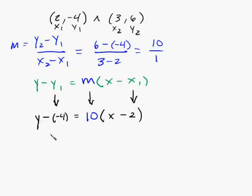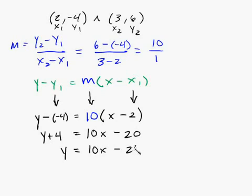So y minus negative 4 is actually y plus 4 equals, distribute the 10, you get 10x minus 20. Then subtract 4 from both sides and you get y equals 10x minus 24. And that is your final answer. Let's clear the screen and do another one.